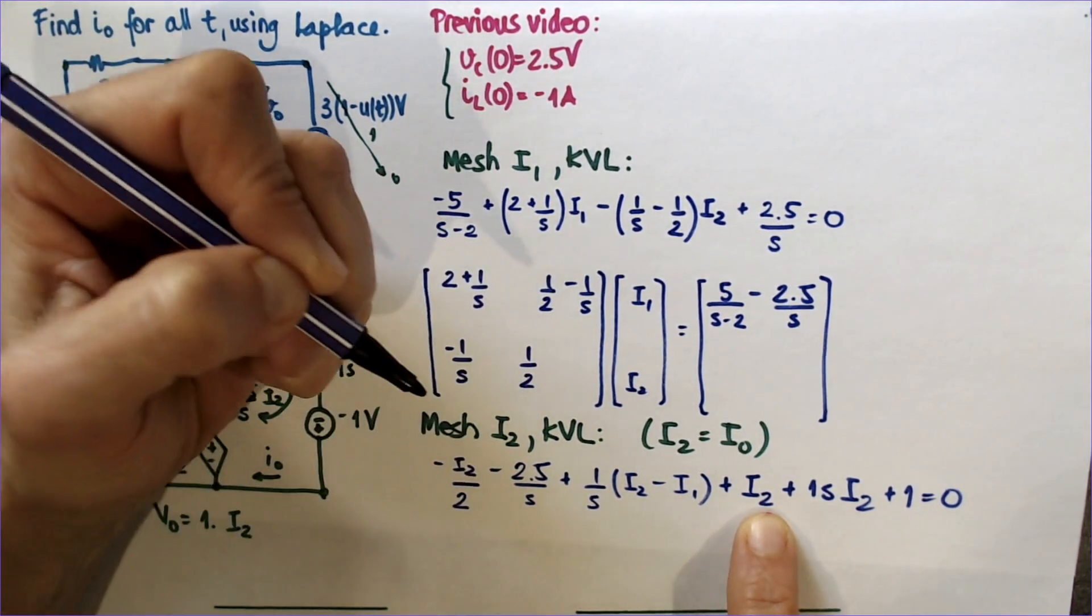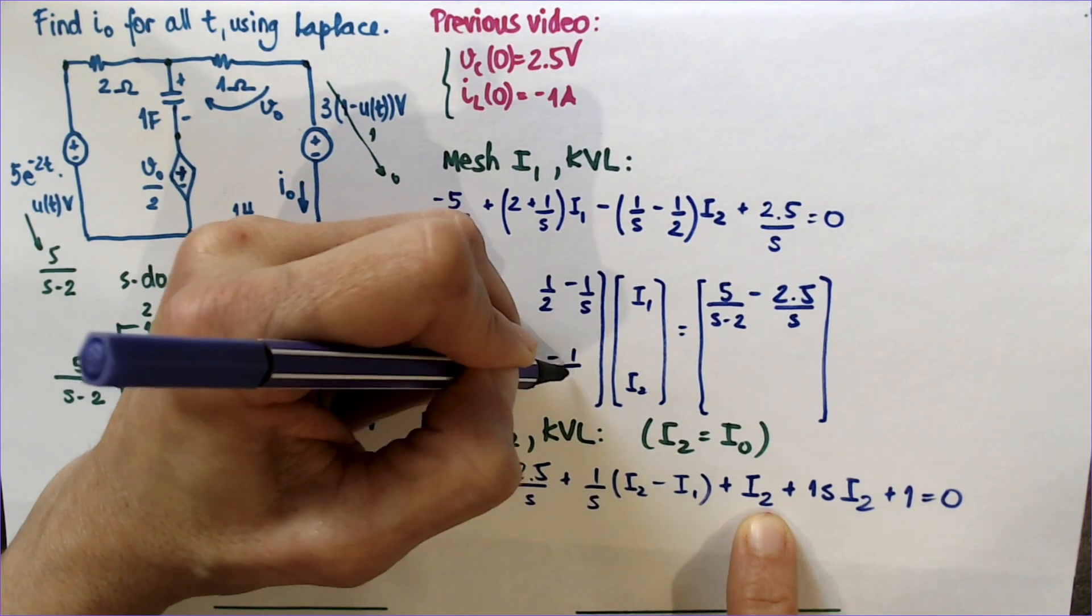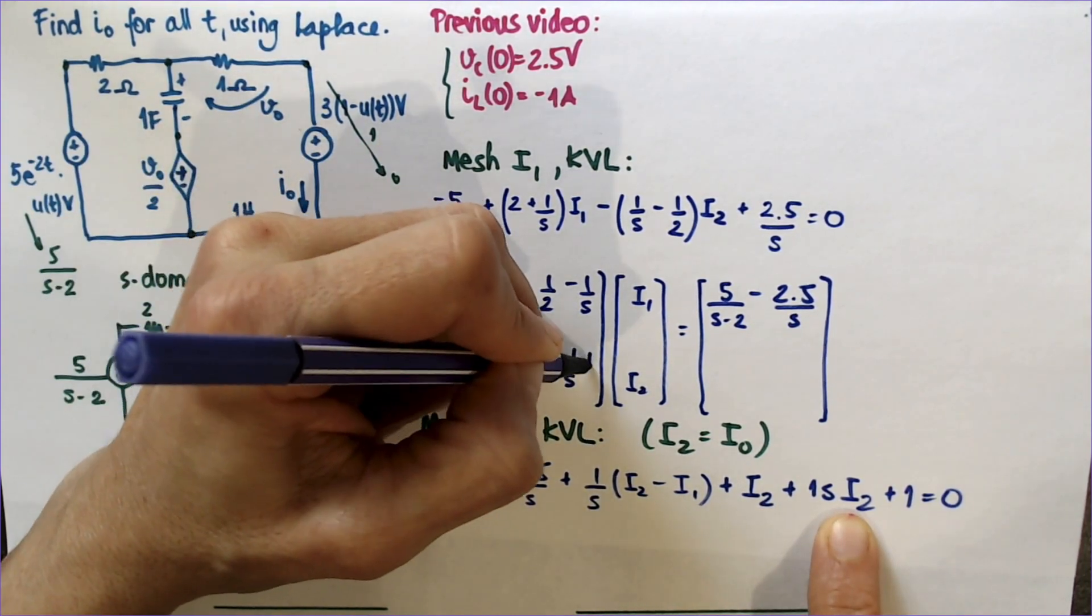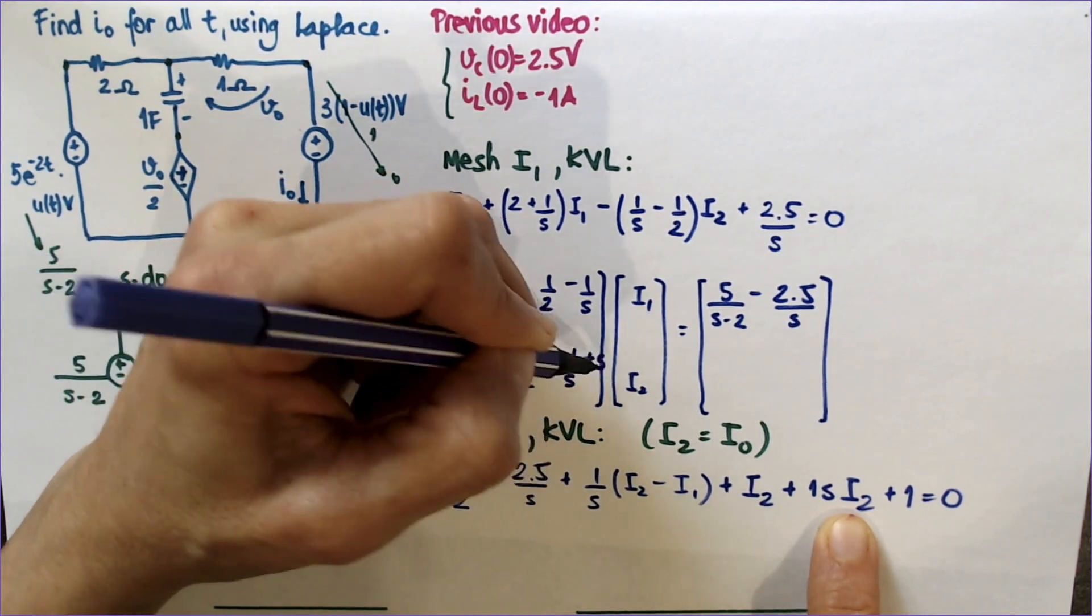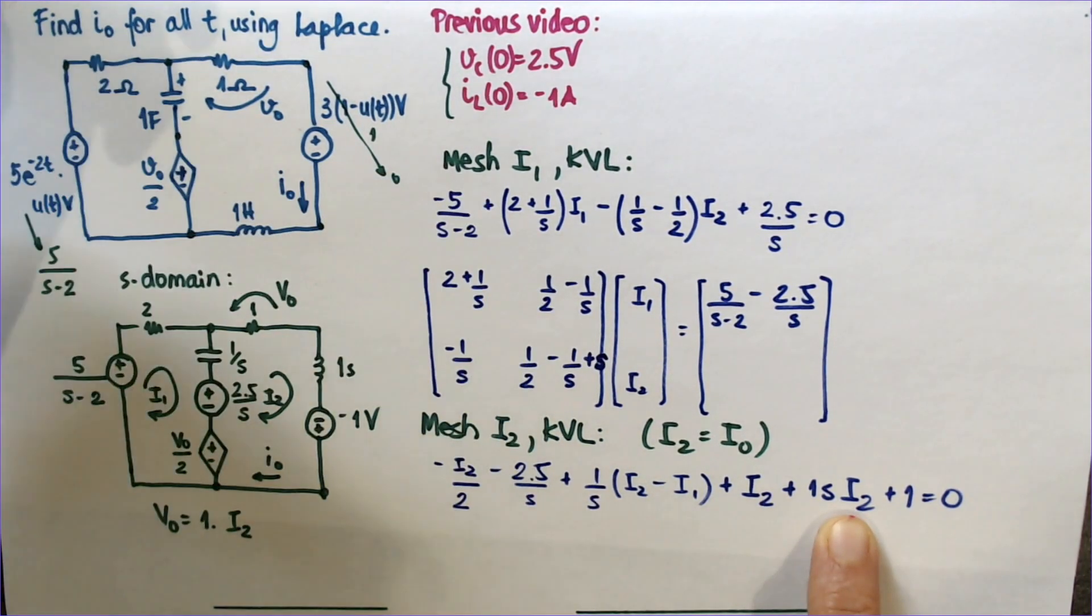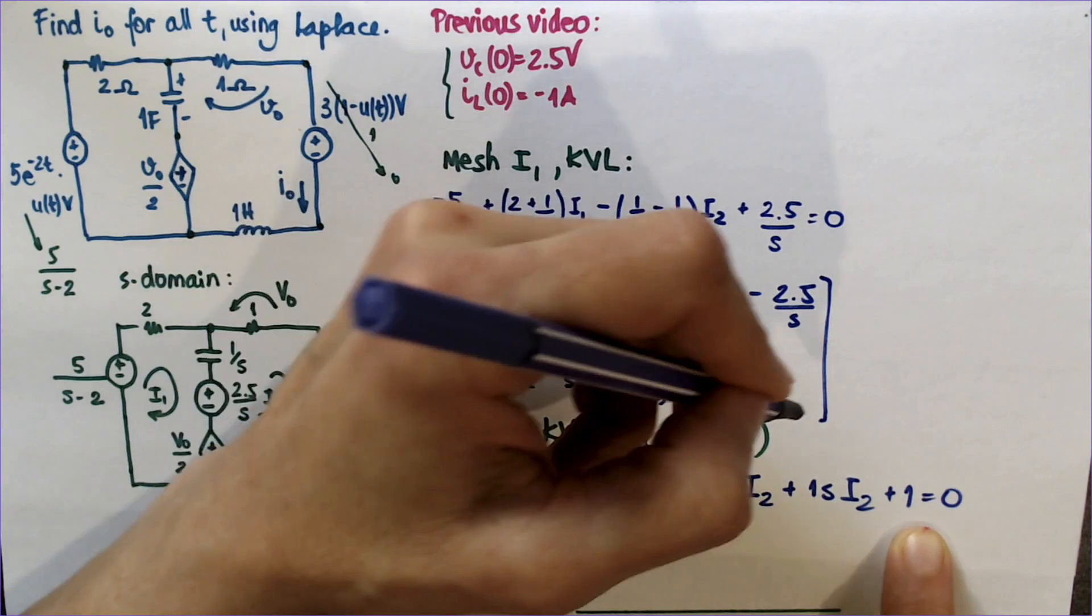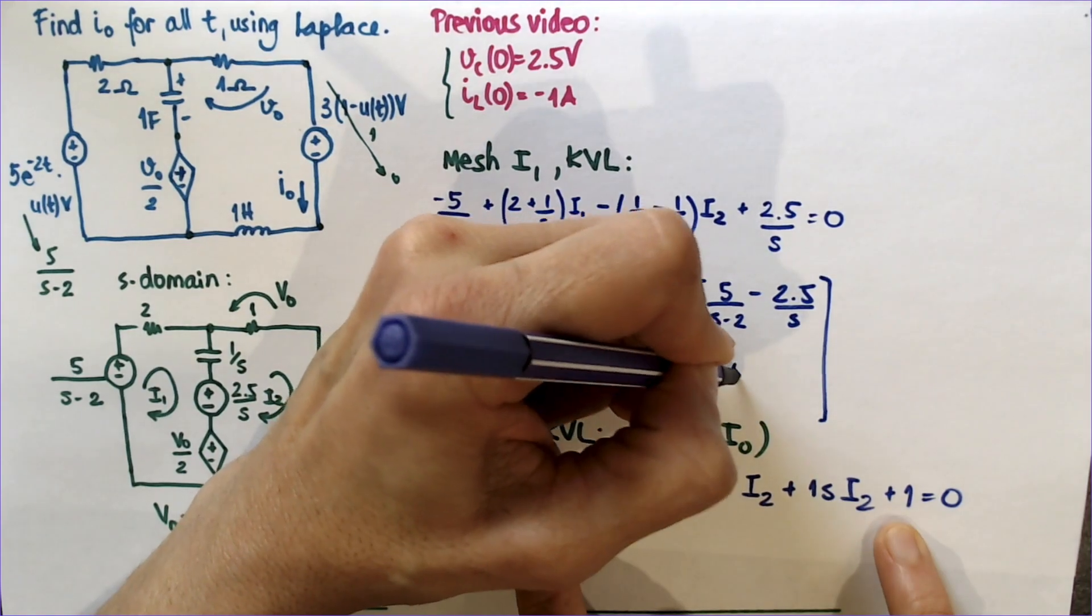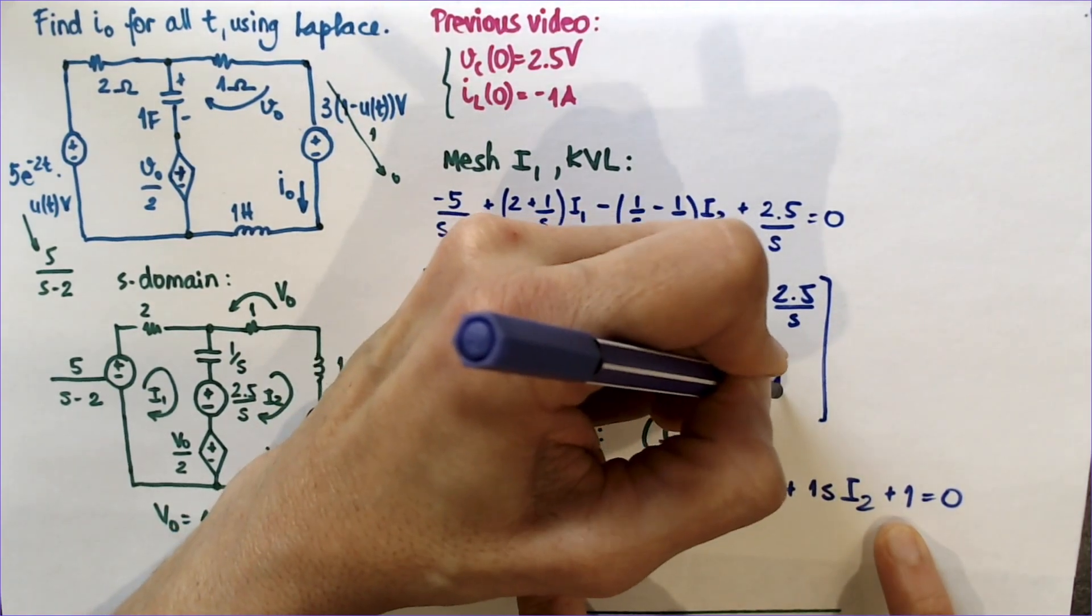So it's half, minus 1 over s, plus s. That doesn't look good, huh? Equals 2.5 over s, minus 1.